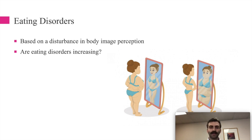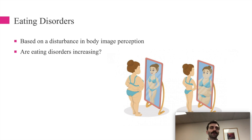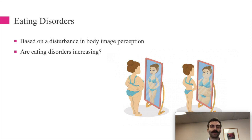Are eating disorders increasing? That's hard to determine. Overall diagnoses over the last two decades have remained relatively stable. However, when broken down by region, some areas — like China and Japan — have seen big increases in eating disorder diagnoses. This is notable because certain risk factors are increasing: urbanization of society, social media use, and social pressure can all increase the risk of eating disorders.